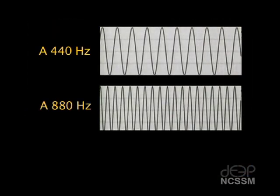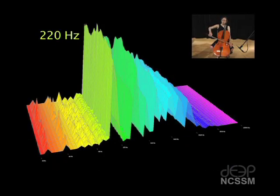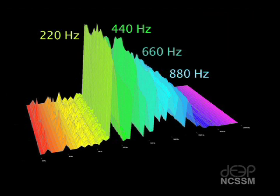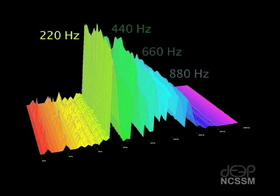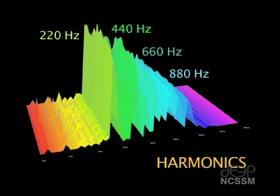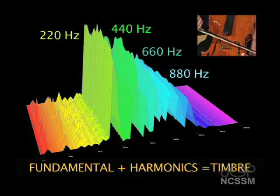In lesson one, we learned that 440 hertz and 880 hertz are higher octaves of the pitch A, and octave relationships are represented by a doubling of any frequency. It is important to note that we don't actually perceive these other frequencies we see in the graph of the cello's note. But these other frequencies and their amplitudes or relative volumes all work together to create the unique sound of every instrument. The frequency that we actually hear is called the fundamental — it is the tallest and lowest frequency. These other frequencies that show up in a sound wave are known as harmonics. This unique sound of an instrument is also known as its timbre.